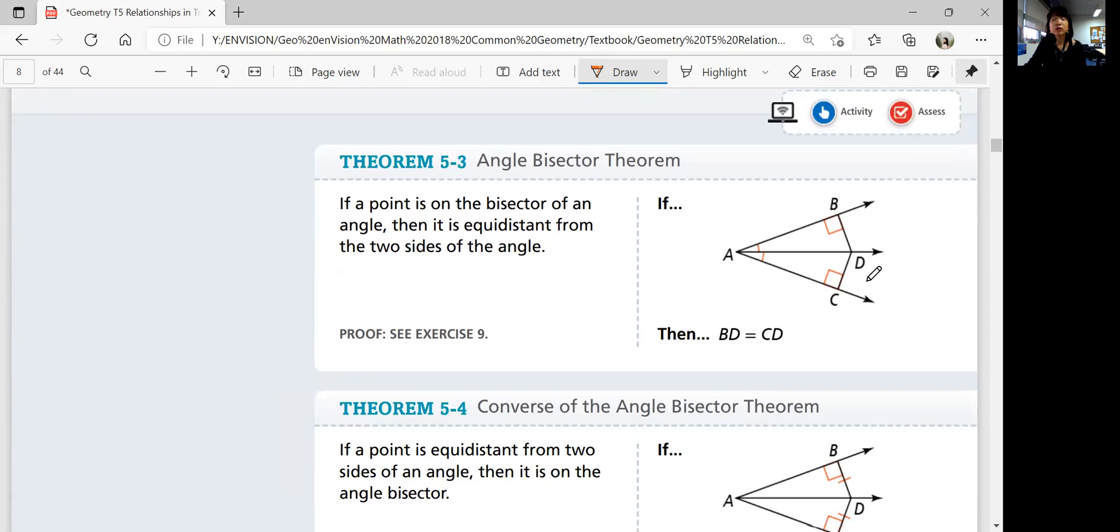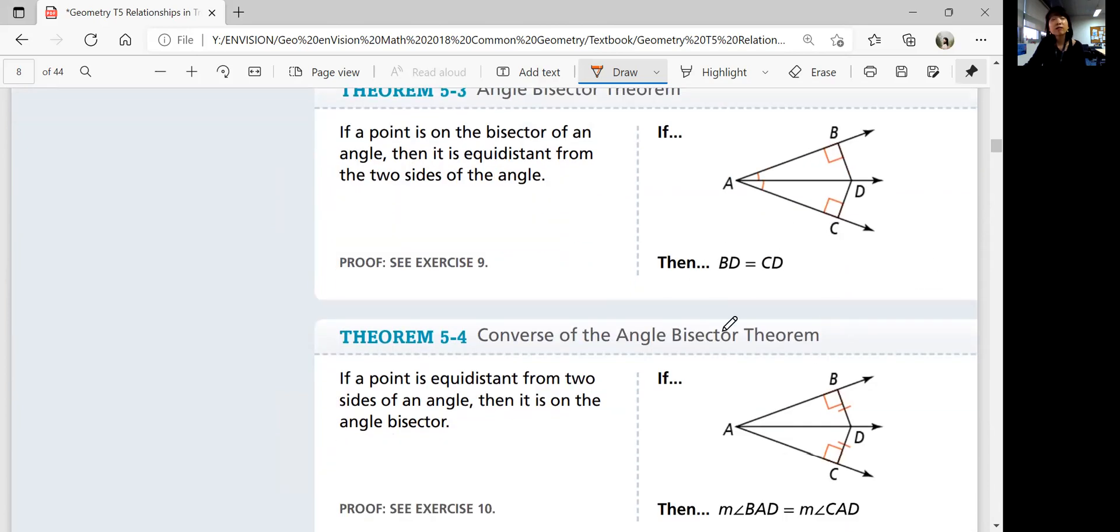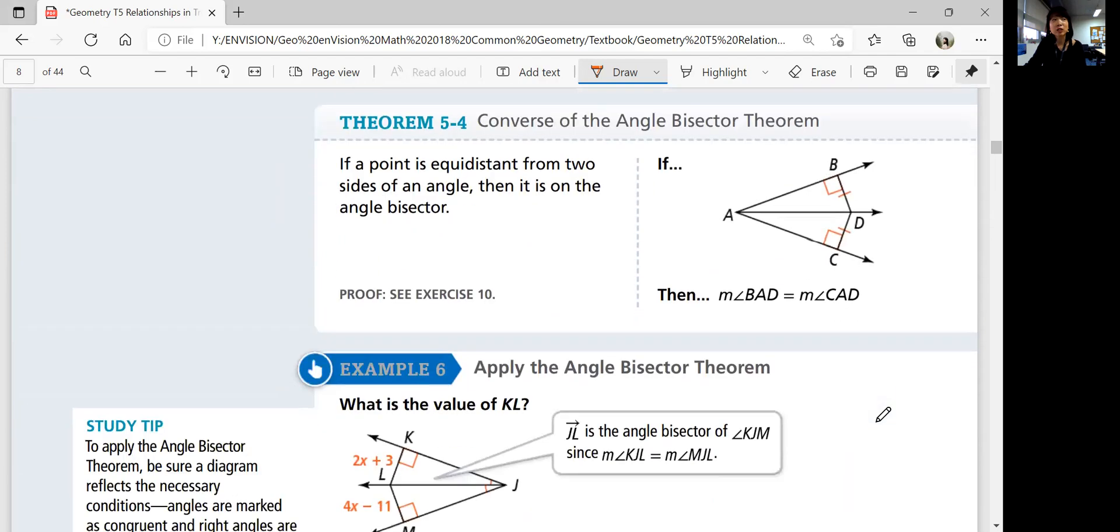So theorem 5-3, angle bisector theorem. If a point is on the bisector of an angle, then it is equidistant from the two sides of the angle. And the converse says if a point is equidistant from the sides of an angle, then it is on the angle bisector.